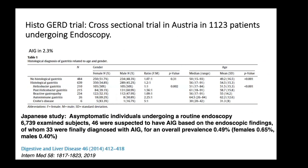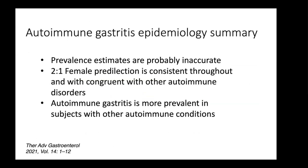In Europe, a cross-sectional study in Austria of just over 1,000 patients undergoing endoscopy found autoimmune gastritis in 2.3%. A Japanese study of 6,739 asymptomatic individuals undergoing routine endoscopy as part of a health check found a prevalence of 0.49%. In that study, a histologic diagnosis was required along with either parietal cell antibody or intrinsic factor antibody, which probably decreased sensitivity. In summary, with existing epidemiological studies, prevalence estimates are probably inaccurate.